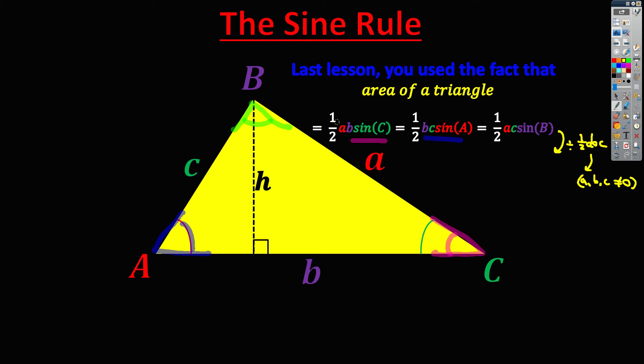then the halves are going to cancel out because I'm dividing all the halves away. And then if I divide by ABC as well, then on the left side, my A and my B are going to cancel out. I'm going to end up with sine C over C.